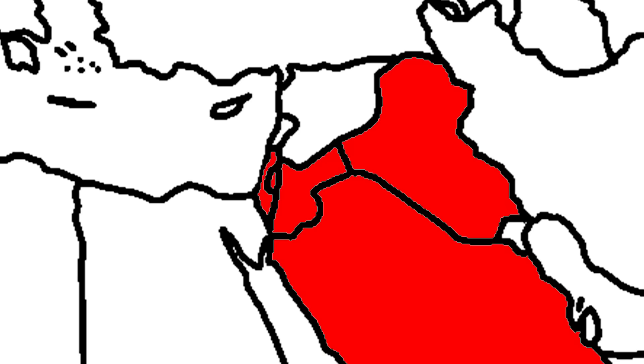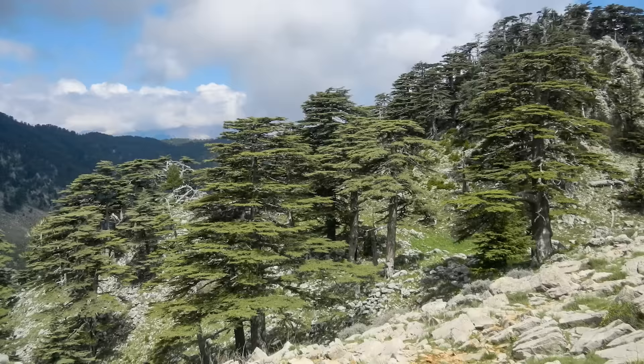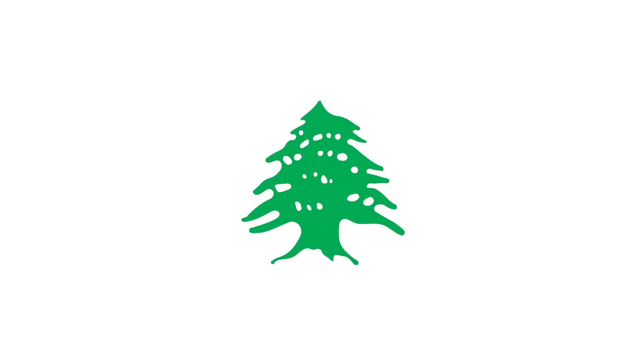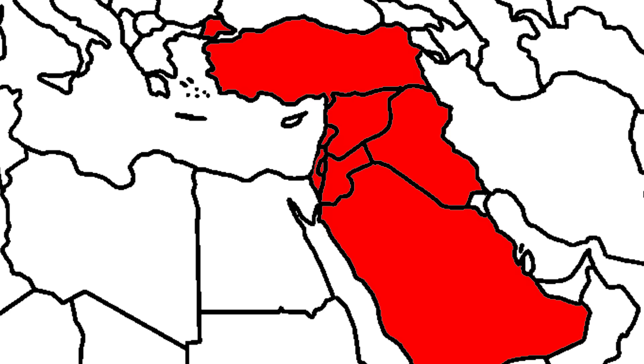Up north, we have Aram, aka Syria, and Lebanon, aka Lebanon. Like Israel, Lebanon is one of the few countries whose name is preserved in the Bible. Since ancient times, the region has been famous for its trees — most of all cedar trees, which were reportedly used to build King Solomon's temple. The cedar has since become Lebanon's national emblem and even appears on its flag.